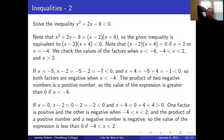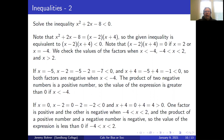We want to solve the inequality x² + 2x - 8 < 0. We note that x² + 2x - 8 = (x-2)(x+4), so the given inequality is equivalent to (x-2)(x+4) < 0. Note that (x-2)(x+4) = 0 if x = 2 or x = -4. So we check the values of the factors in the regions: x < -4, -4 < x < 2, and x > 2.